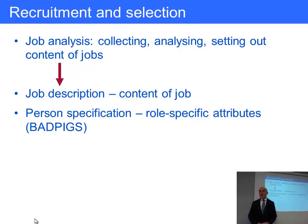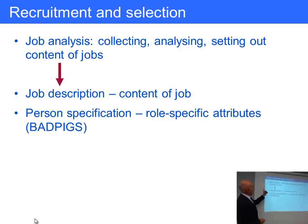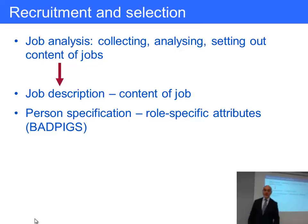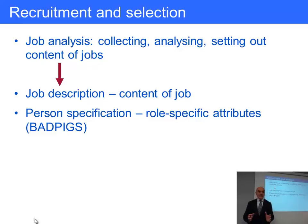From the job description you can get to a person specification — defining the sorts of qualities a successful person would need to fulfil the job description. The acronym BADPIGS comes from Roger's Seven Point Selection Plan, which covers the personal attributes and skills looked for in recruitment. It's a little old-fashioned in some areas, but it gives a useful idea of what we're looking at.